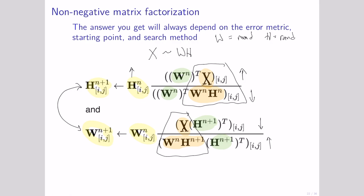Just like with PCA, at either extreme we will end up with the same sort of behavior. If we only have one component, we'll have a vector for W and a vector for H, giving us a very rough approximation of X. But so long as the values of X are positive, we can end up with a perfect reconstruction — we could always have the case where X equals X times the identity matrix. So if the number of components R is really large, we can perfectly reconstruct X. We can use the exact same methods as with PCA to choose how many components we actually want to use.